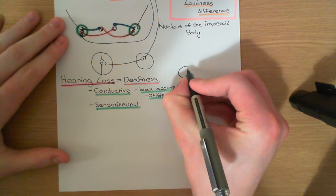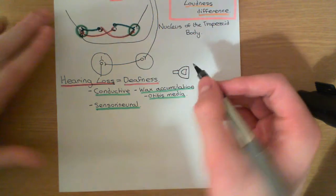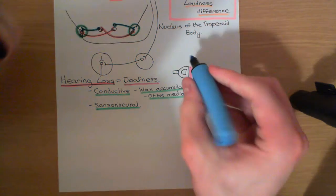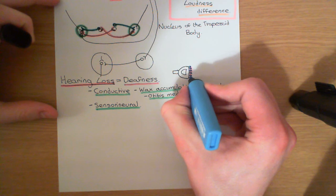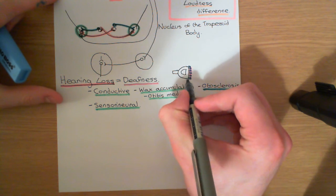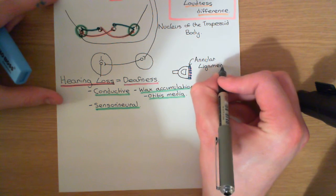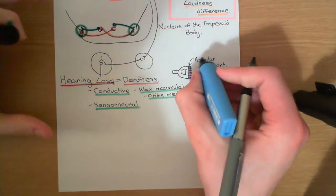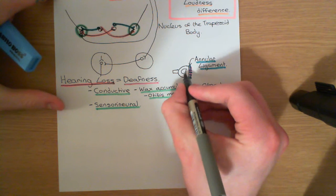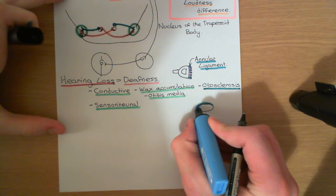If we look from above, this is the footplate of the stapes, with the head of the stapes there as well, and the oval window here. There is a connection that runs all the way around — 'annular' refers to an annulus, which is a ring. So there is a ligament running all the way around between the edge of the oval window and the edge of the footplate of the stapes, known as the annular ligament. This keeps the stapes positioned nicely within the oval window so it doesn't fall out.